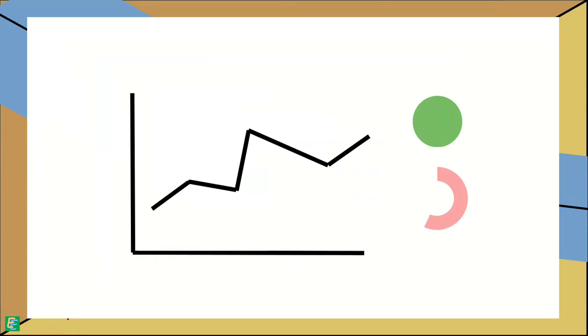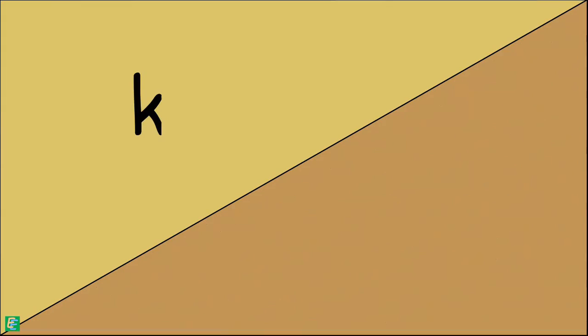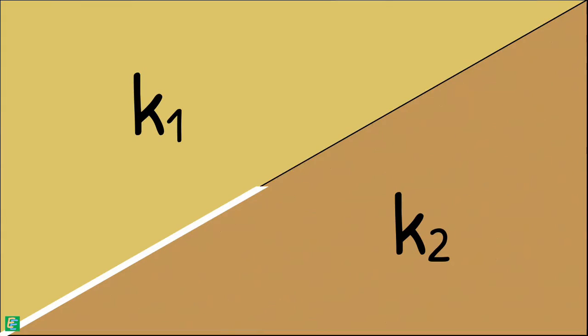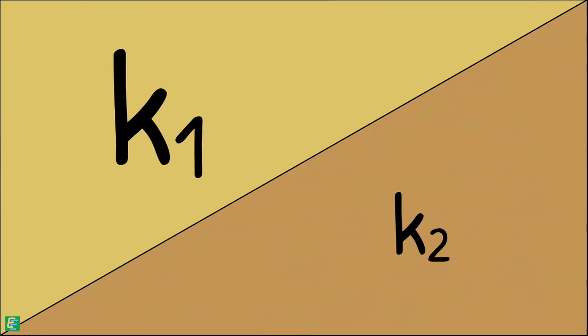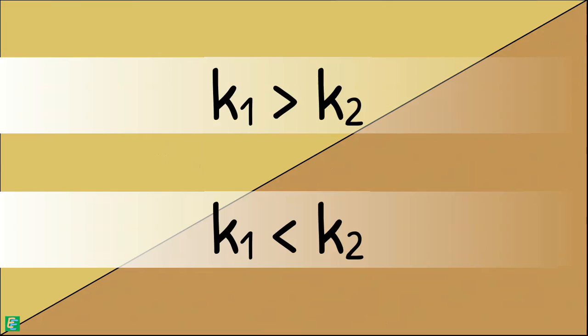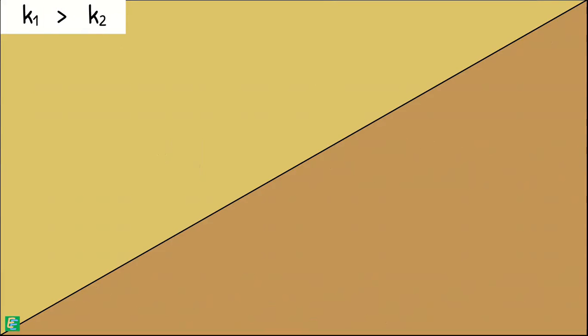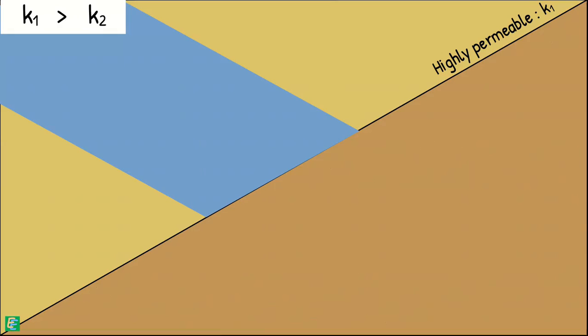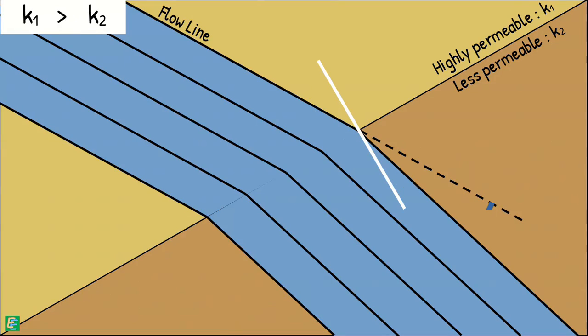To analyse such a flow, let us begin by considering two soils with coefficients of permeability k1 and k2 meeting each other in a soil structure. Either k1 may be greater than k2 or it may be less than k2; we will consider both cases one by one. Let us begin with Case 1, that is k1 is greater than k2. Flow is from a high permeable or rare medium to a less permeable or dense medium, so the flow lines deflect towards the normal.